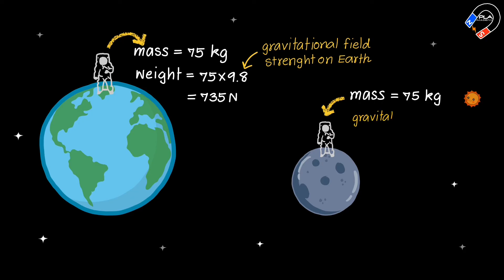This is because the gravitational field strength on the Moon is 1.6 newtons per kilogram, which is 6 times weaker than on Earth. Therefore, their weight is 75 times 1.6, which equals 120 newtons.